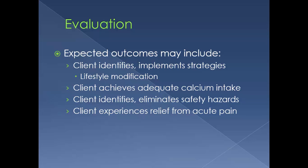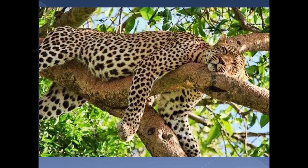Expected outcomes may include that the client identifies and implements strategies to change or modify their lifestyle — like smoking cessation, weight-bearing activities, and moderation of alcohol intake. The client achieves adequate calcium intake, identifies and eliminates safety hazards, and experiences relief from acute pain. This is the end of osteoporosis. If you have questions, let me know and I'll try to help clarify anything.